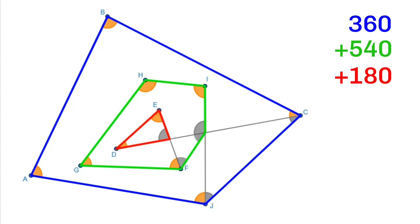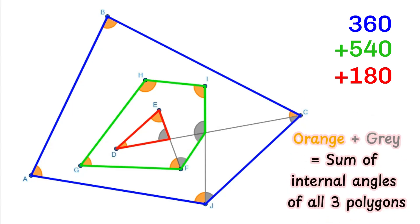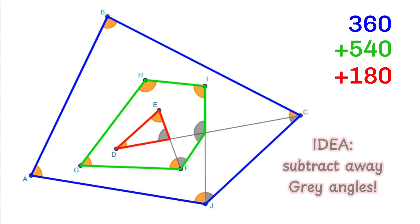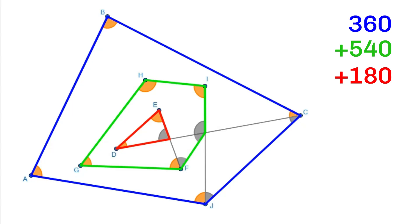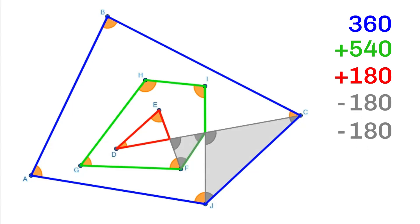From the diagram, we see that the sum of both orange and gray angles is equal to the sum of internal angles of all three polygons. If we can subtract away the gray angles, then we would have our answer. The gray angle in the red triangle has the same size as its opposite angle, so we move it to the opposite side. The same is true of the big gray angle in the green polygon. We can move it over too. The gray angles are just the internal angles of two gray triangles. We subtract them away from the total sum. That gives us 720 degrees, and that is the answer.